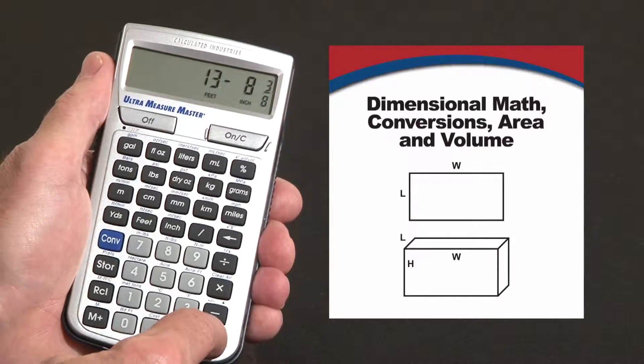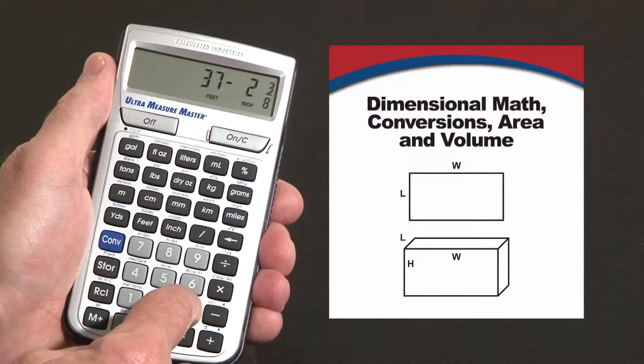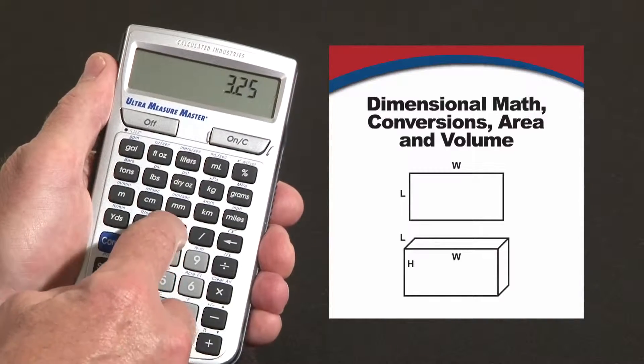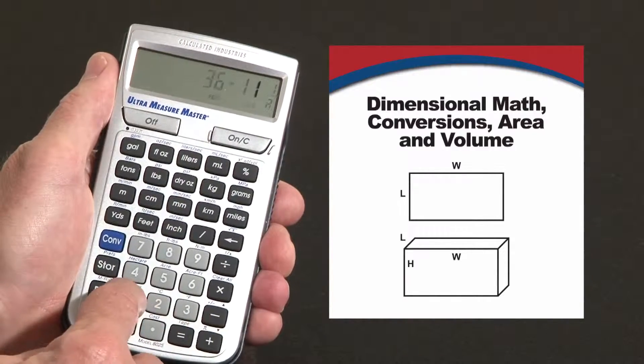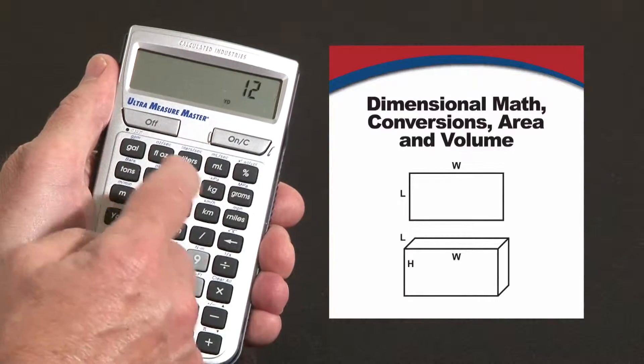You can mix formats, for instance plus 23.5 feet minus 3.25 inches plus 10 centimeters minus 12 yards.